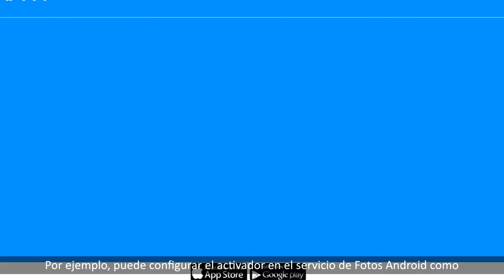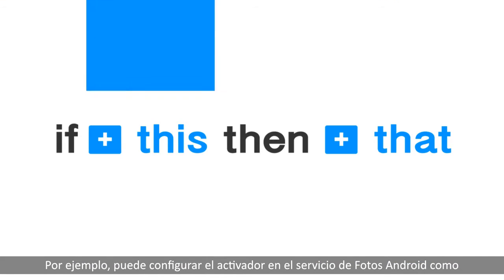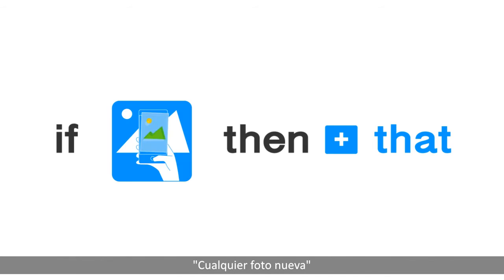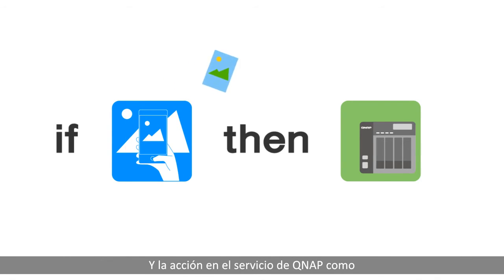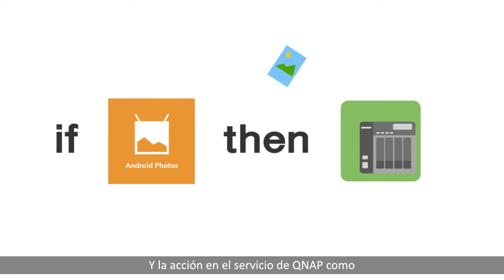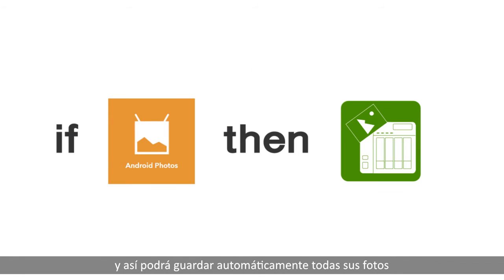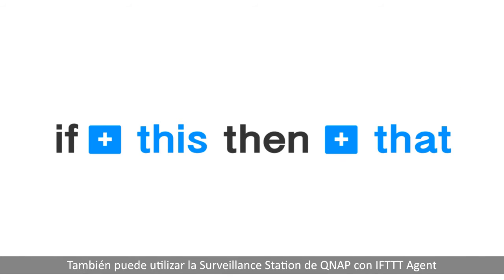For example, you can set the trigger on Android Photo Service as 'Any New Photo' and the action on QNAP Service as 'Download File from URL.' Then you can automatically back up all your new photos from your Android devices to the QNAP NAS.